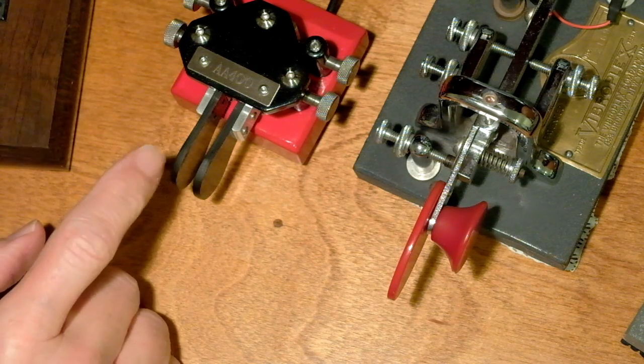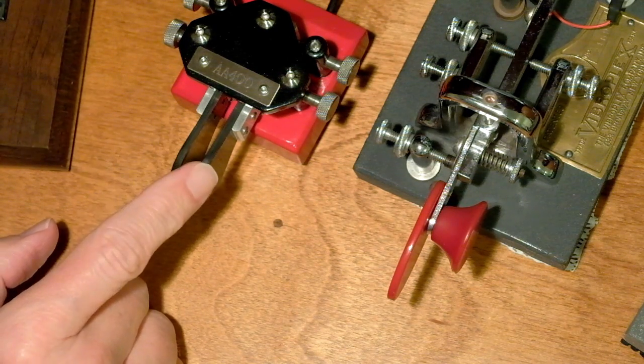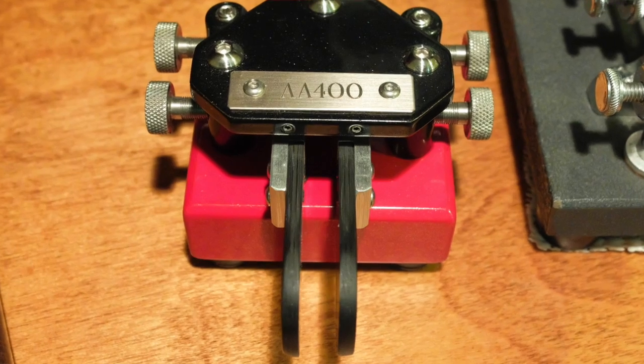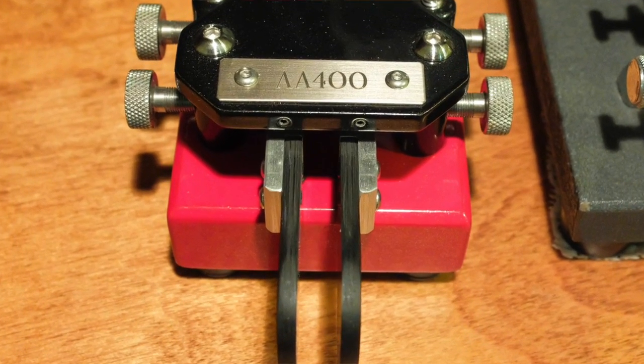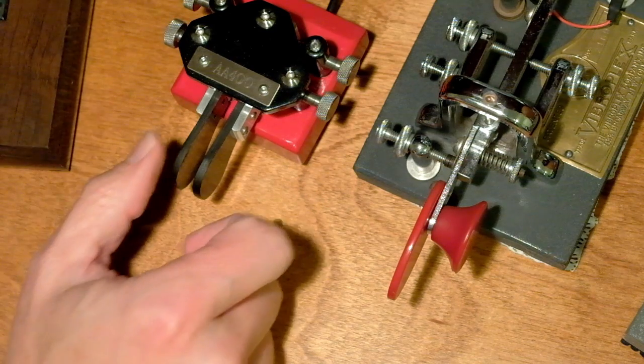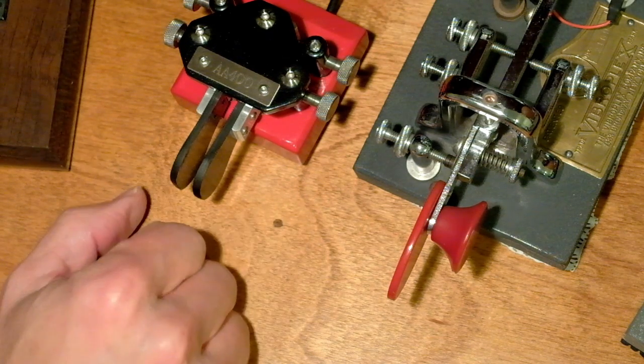Electronic keyers repeat the elements of whichever side you're sending. This is a dual lever paddle. It has two levers, one, two. It has a dit side and a dah side.